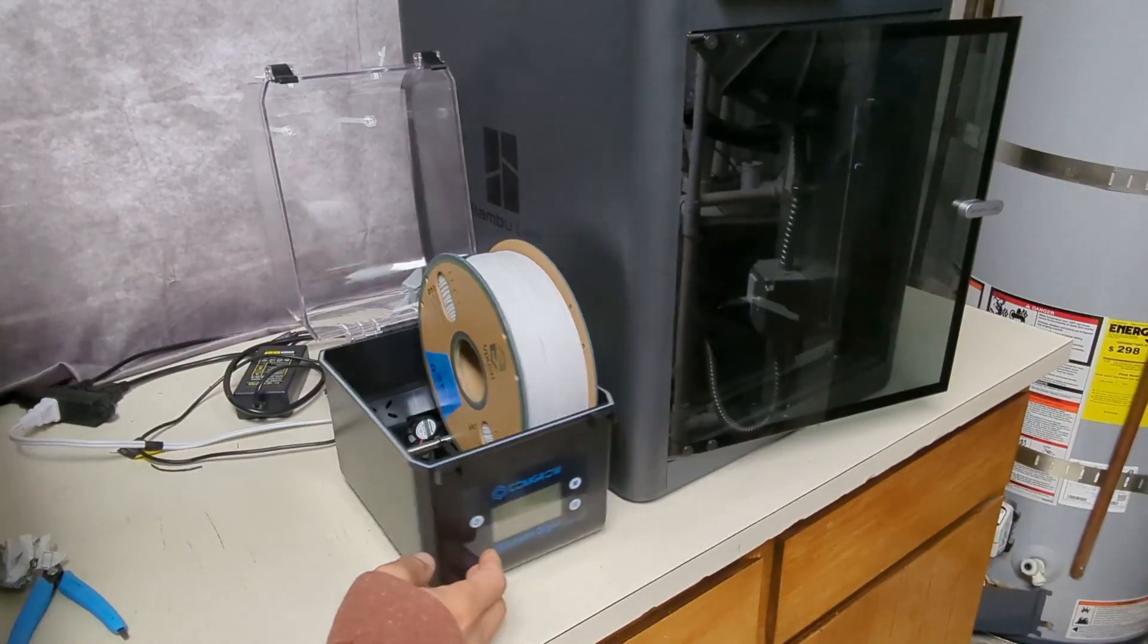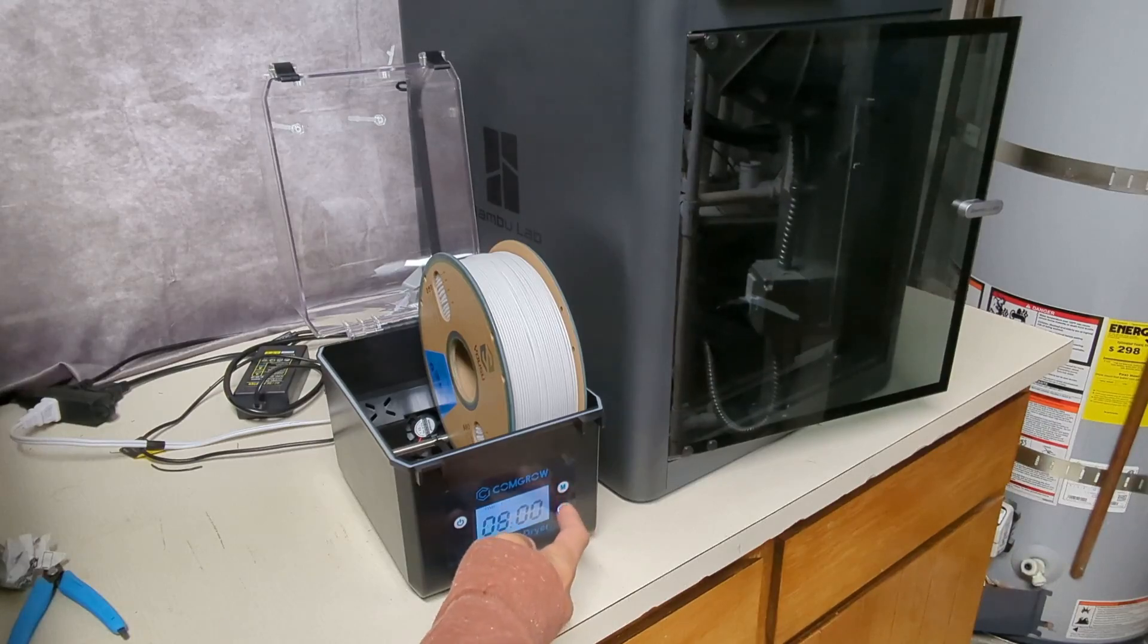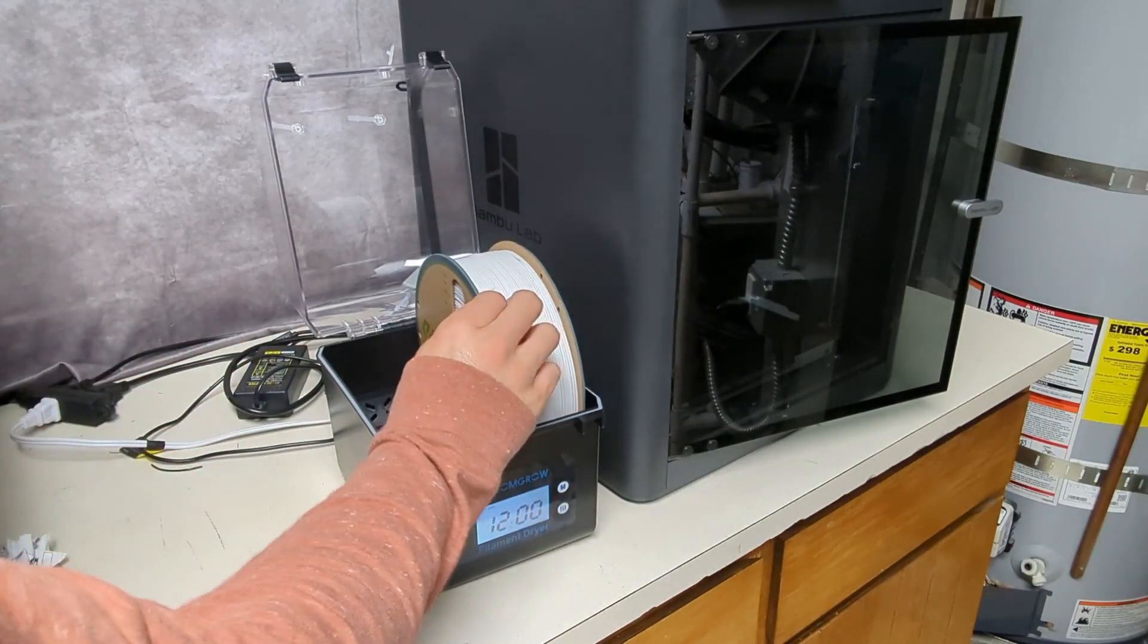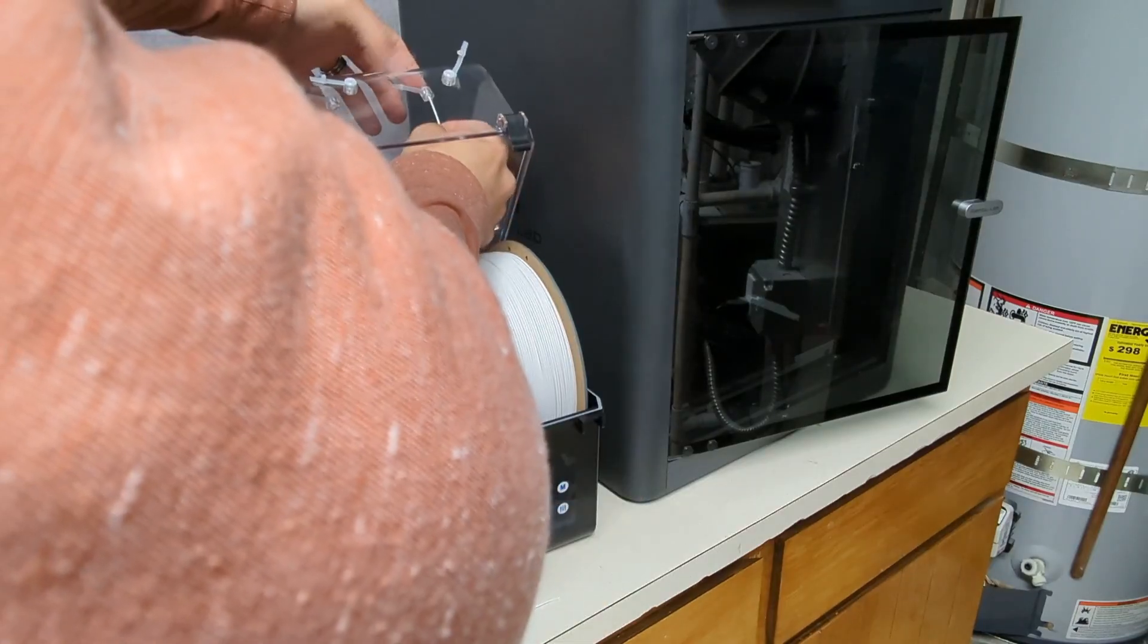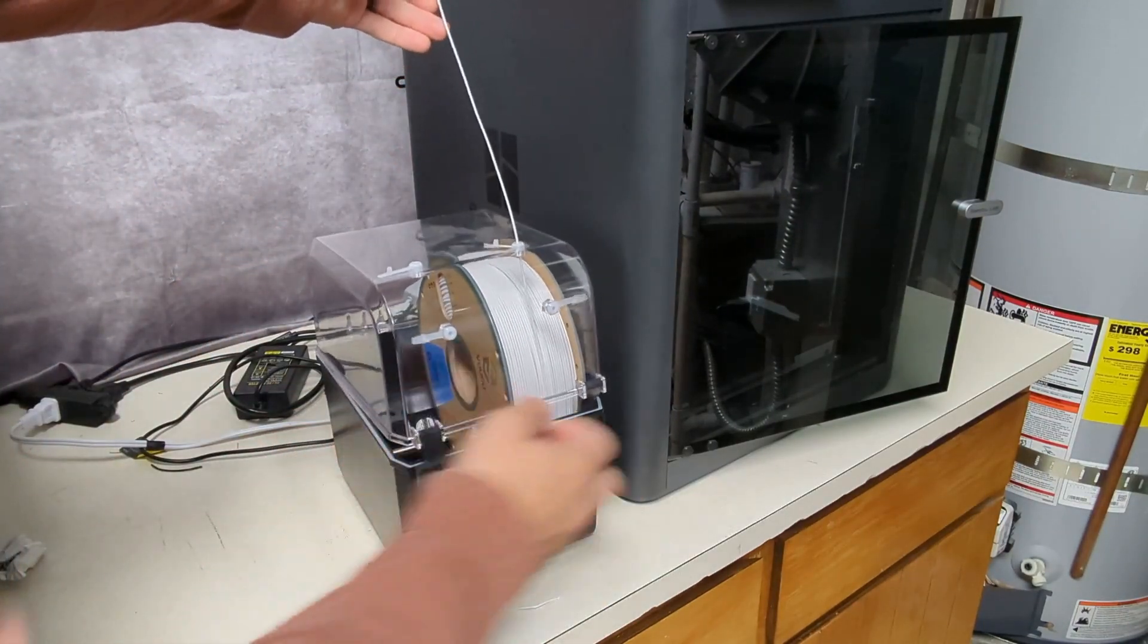I didn't read anything online about needing to dry your polypropylene filament before printing, but I always think it's good practice just to give it a couple hours of drying before printing with it, so I stuck the polypropylene filament in the dryer for a few hours and then when that was done, I sent the print.